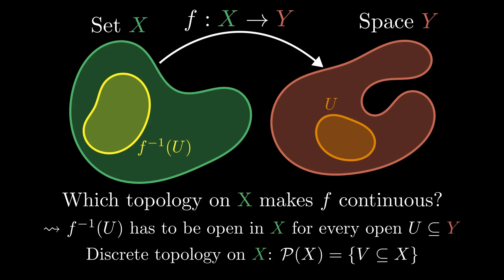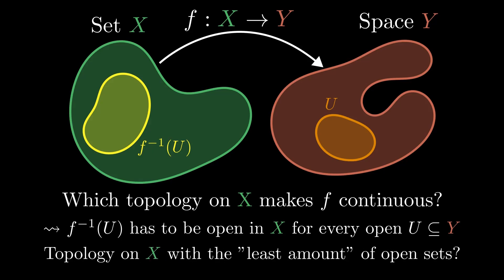This is however not a very interesting solution. Instead we could ask which topology with the least amount of open sets makes f continuous. Before we can answer this question, we first have to understand how different topologies relate to each other.